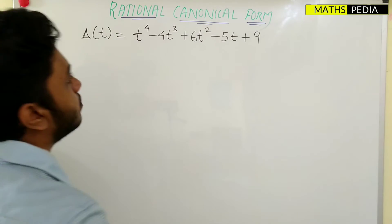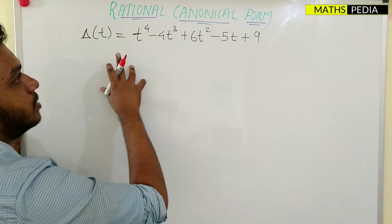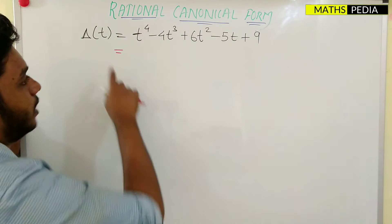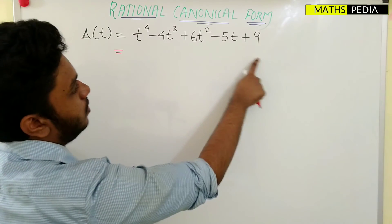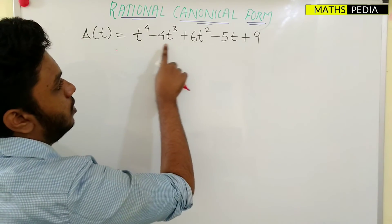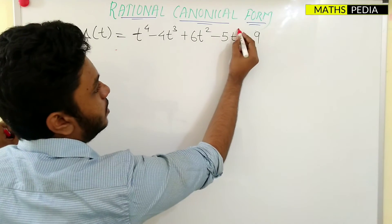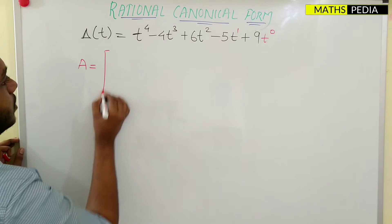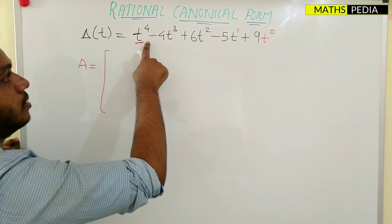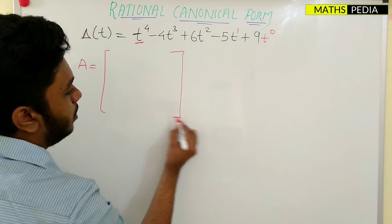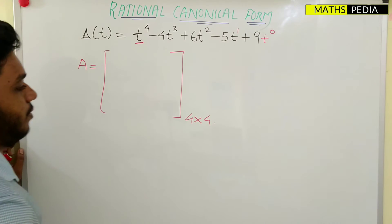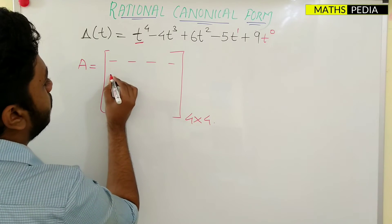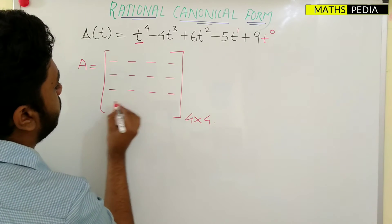Now let us see the last problem. The characteristic equation is given and we have to form the matrix for rational canonical form. There is no need to expand this characteristic equation since it is already expanded. You can see T power 4, T power 3, T power 2, T power 1, and T power 0. Let A be the matrix — the highest power of variable T is 4, so this will be a 4×4 square matrix.